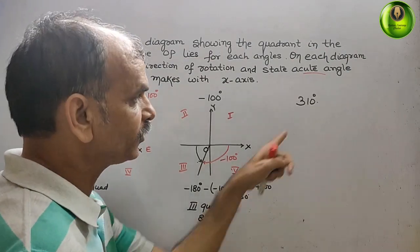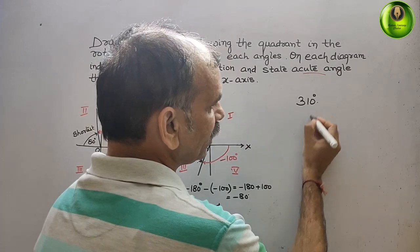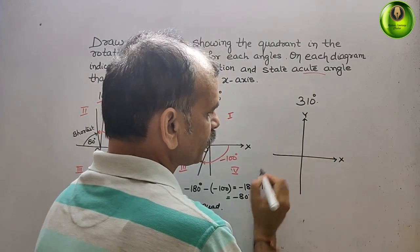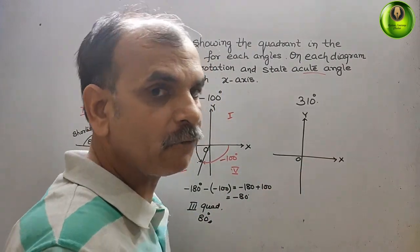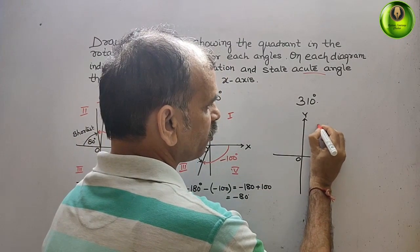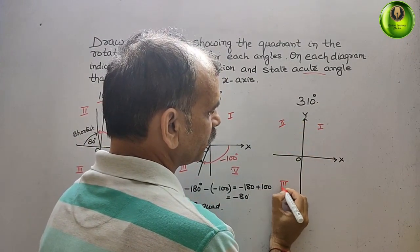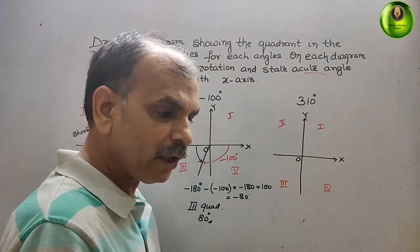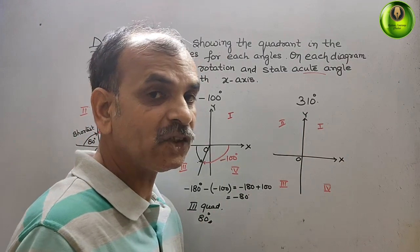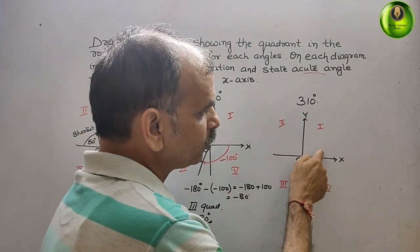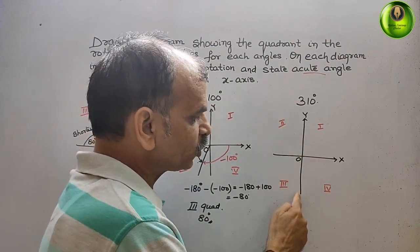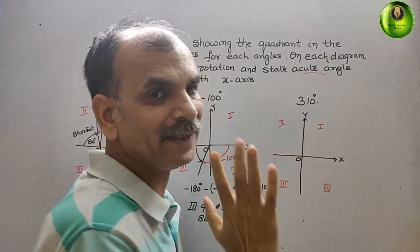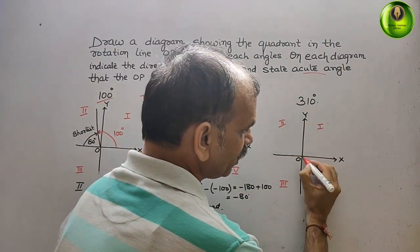Next comes 310 degrees, which is positive, so we move anti-clockwise. We draw the X-axis, Y-axis, and center O, and mark the four quadrants. Moving anti-clockwise: the first quadrant ends at 90 degrees, second at 180 degrees, third at 270 degrees. So 310 degrees is 270 plus 40 degrees, meaning we go 40 degrees past the third quadrant boundary into the fourth quadrant, and draw the line OP there.